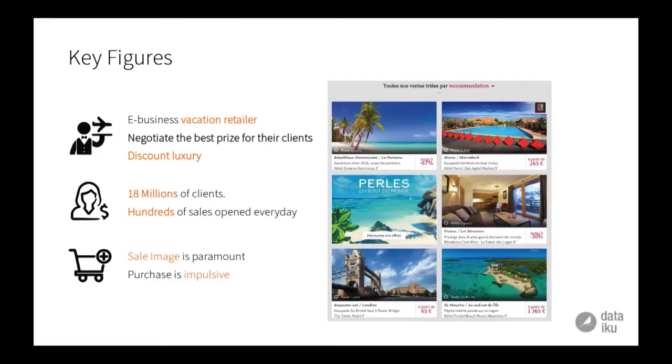They have around 20 million users and hundreds of sales open every day, so they really need a recommendation engine. The image is really important because it drives the click, especially because the marketing team at this company believes that the purchase is impulsive. You don't go to this website to find something at a specific date — you go there just to see, okay, I'm looking for a weekend somewhere, I don't know where exactly. Oh, this is London in two weeks, I'm available, so probably I'm interested and I will purchase it.